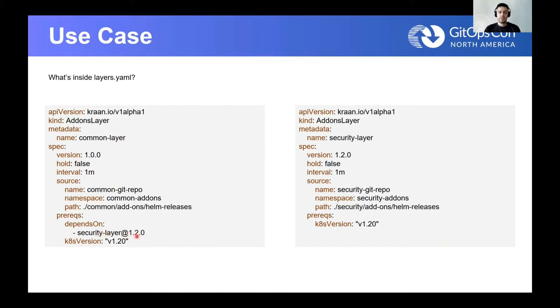One other thing to notice here is the version of the layer, but also notice that the version is used in the depends on property as well. This is what we call the version dependency system. The common layer here depends on the security layer at version 1.20. So unless this layer is already deployed to the cluster, the processing of this layer won't start by CRON. Managing the prerequisite section wisely combined with defining meaningful layers in the git repository can help you achieve even some of the most complex deployment scenarios.